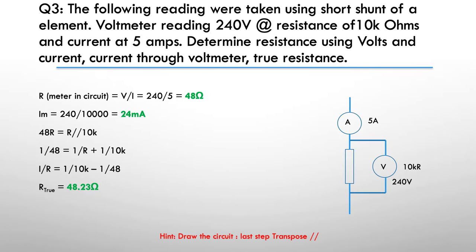Here's why I worked out the answer. The resistance with the meter in circuit: R is the volts divided by the current, so 240 divided by 5 tells me the internal resistance is 48 ohms.